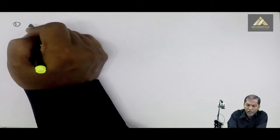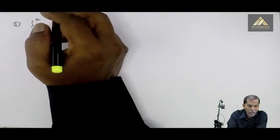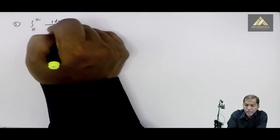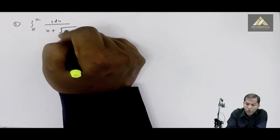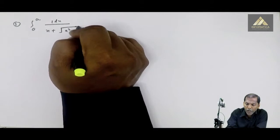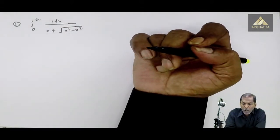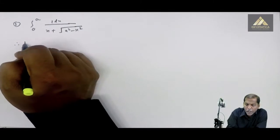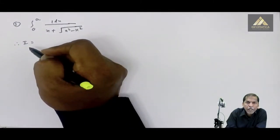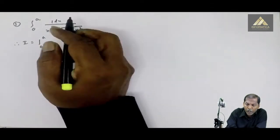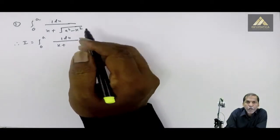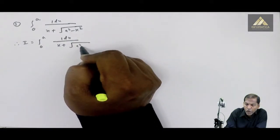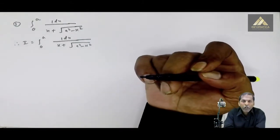Question number 3 is: integral from 0 to a of 1 dx upon x plus square root of a square minus x square. So, I equals the integration from 0 to a of 1 dx upon x plus square root of a square minus x square.